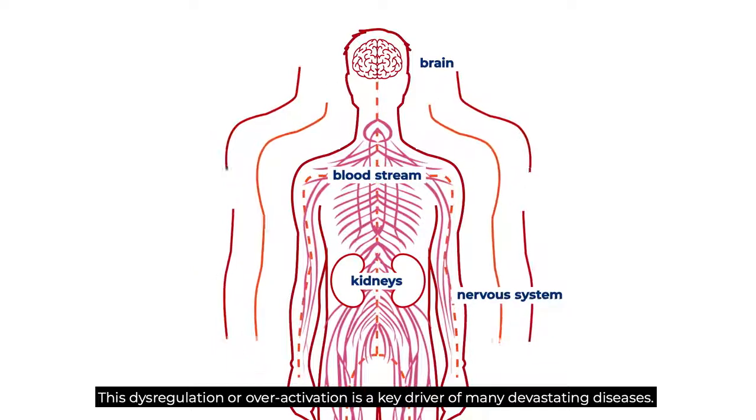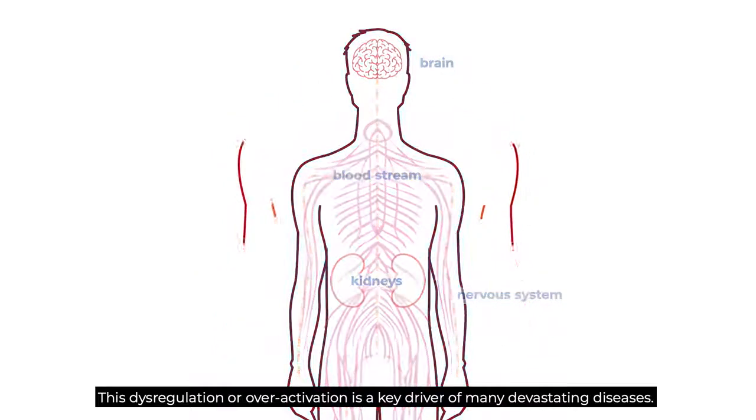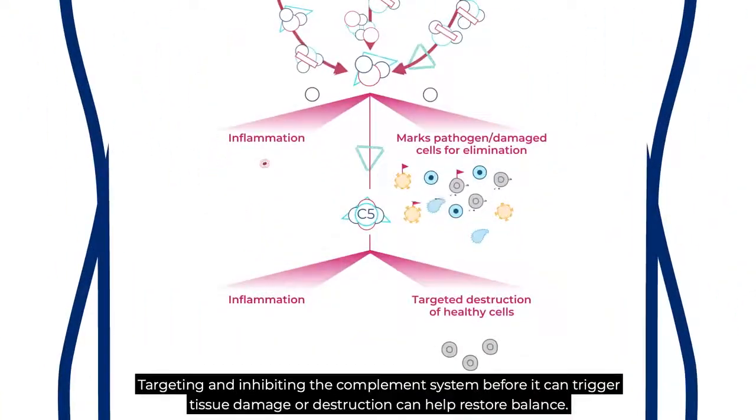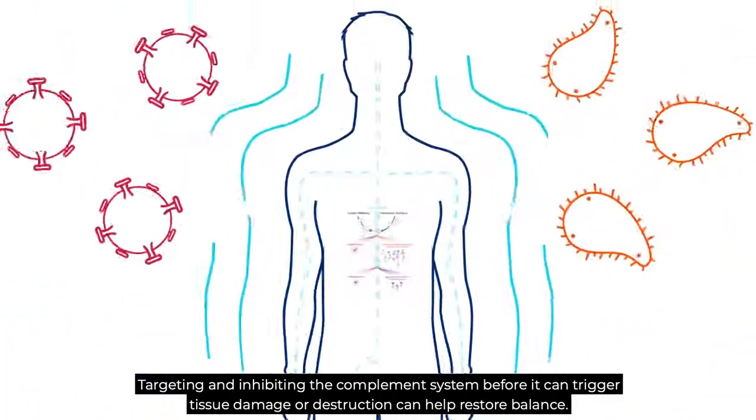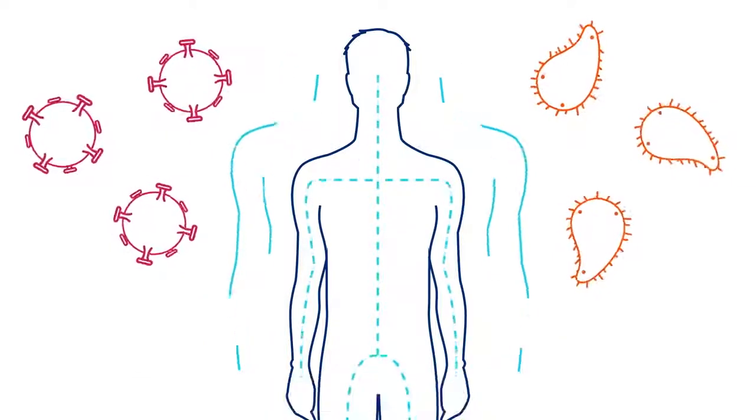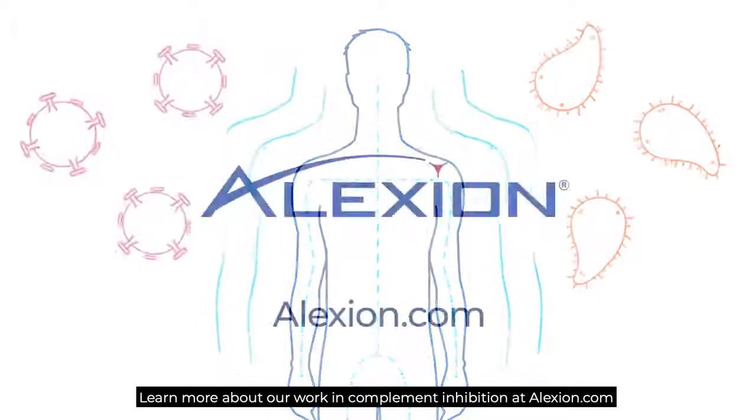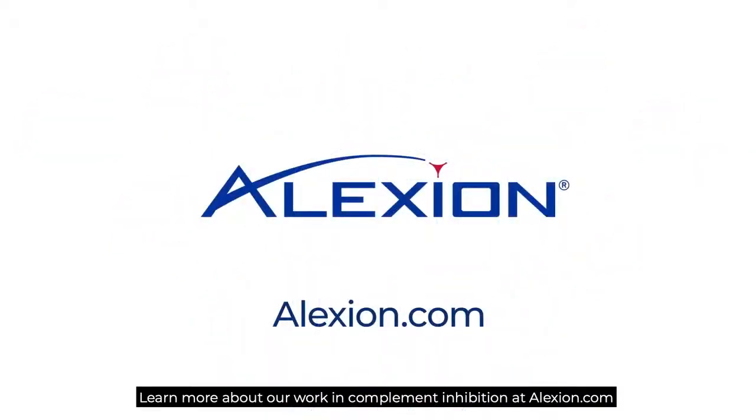Targeting and inhibiting the complement system before it can trigger tissue damage or destruction can help restore balance. Learn more about our work in complement inhibition at alexion.com.